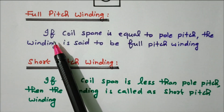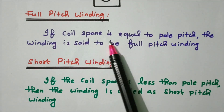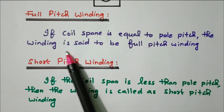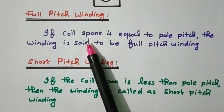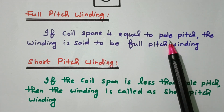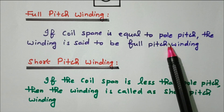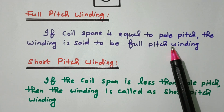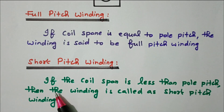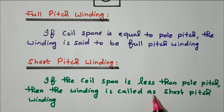If the coil span is equal to the pole pitch, the winding is said to be full pitch winding. Coil span is the number of armature conductors between the two sides of the coil; pole pitch is slots per pole. If both are equal, it is called full pitch winding. If the coil span is less than the pole pitch, then the winding is called short pitch winding.